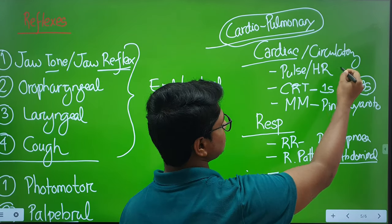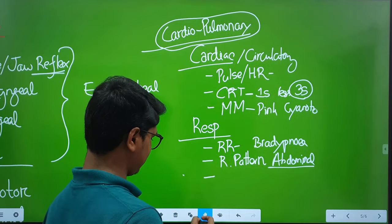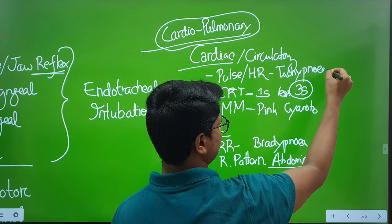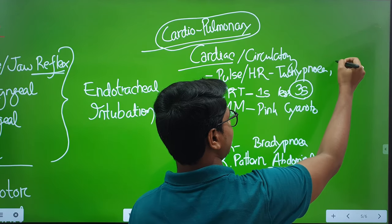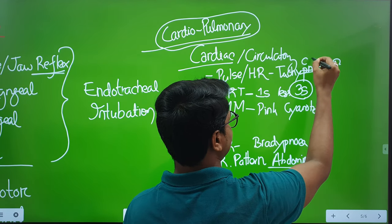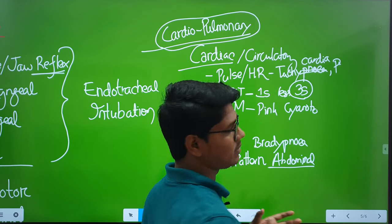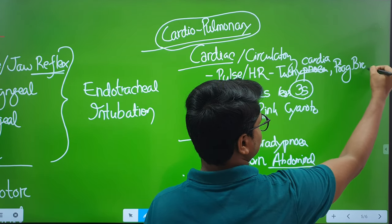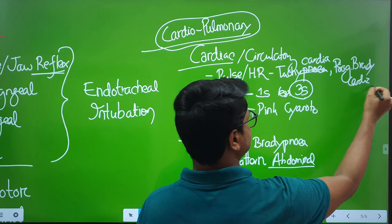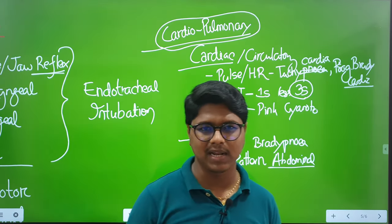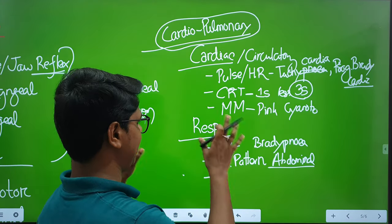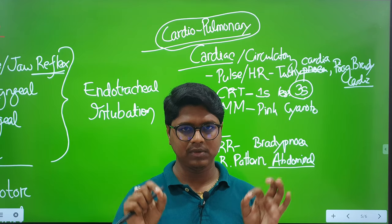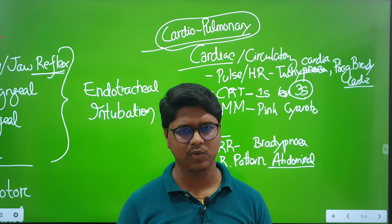Regarding heart rate: in Stage 1 and 2, under the effect of epinephrine, you will find tachycardia. In Stage 3 we will find progressive slowing. In Stage 4 you will find diminished or minimal heart rate — sometimes it ceases to exist. These are all the parameters and reflexes you need to check, assessed every five or ten minutes according to your protocol.